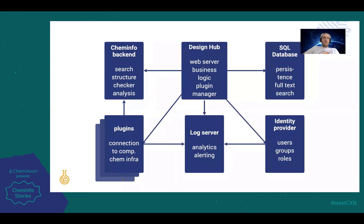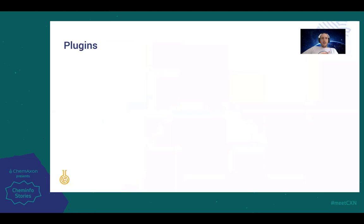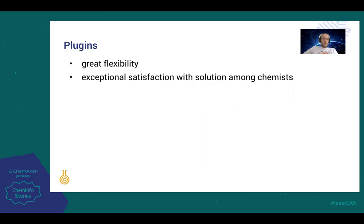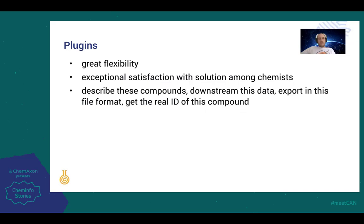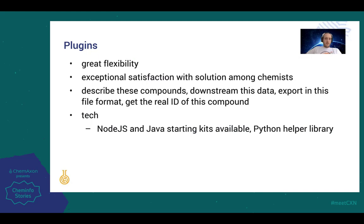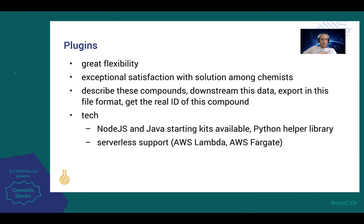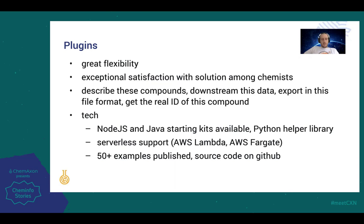The main point I want to highlight is plugins, which serve as connections to computational chemistry infrastructure. Plugins offer great flexibility for Design Hub, and the solutions we can put together with plugins have proved to be exceptionally satisfying among chemists. We can use plugins in various workflows such as describing compounds, downsampling data, or exporting a data set in a convenient file format. The technology behind the plugins supports either Node.js or Java, and very recently we also added a Python helper library for machine learning projects. With more and more examples, we can run entire plugins on serverless platforms such as AWS ECS and Fargate. All of the examples have been published with source code on GitHub.